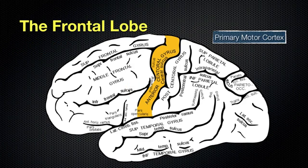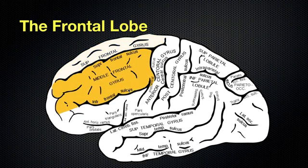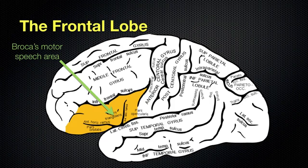Then, going anterior from that area, we have the superior frontal gyrus, the middle frontal gyrus, and the inferior frontal gyrus. And in the left hemisphere of the brain, in the frontal lobe, we have an area called the Broca's motor speech area. That has a big part to do with the motor components of speech — the way your mouth moves and the muscles controlling it. It is in the left hemisphere, not the right, and it deals with motor control of speech.